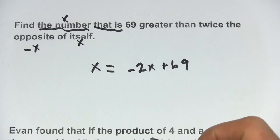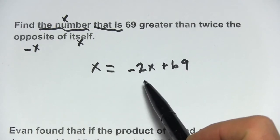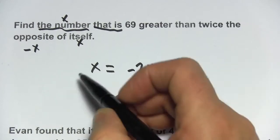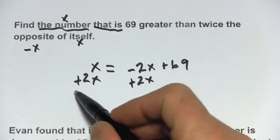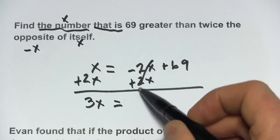All right, now we've got an equation we can deal with. I think what I'm going to do, since I've got x's on both sides of the equal sign, I'm going to get rid of this negative 2x by adding 2x. I like to get rid of those negative numbers when I can.